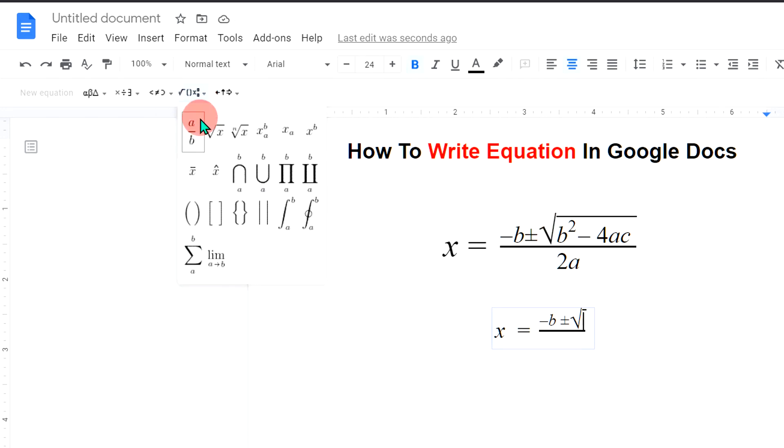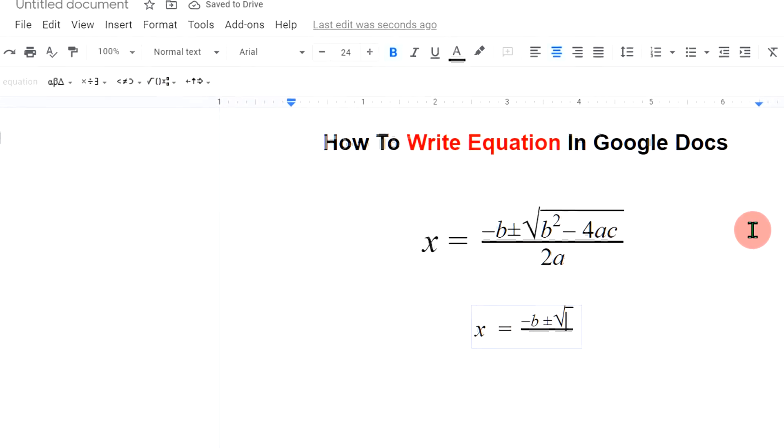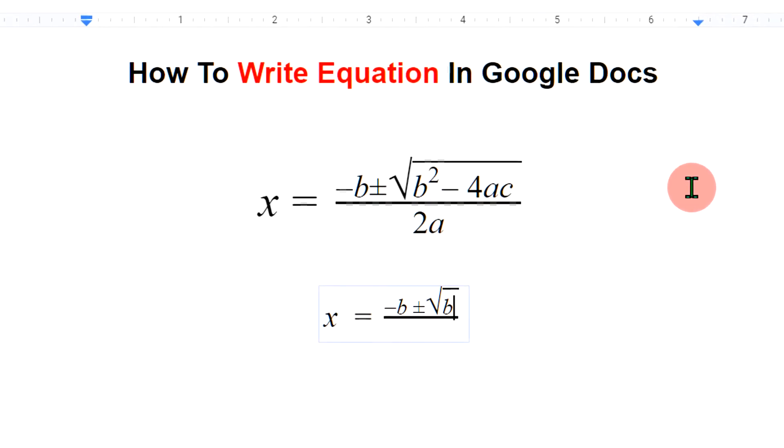to the math operator and select here x raised to b. Type b and press forward arrow key and the cursor will go to the superscript. Now type 2, press again forward arrow key, and type minus 4ac. Now again